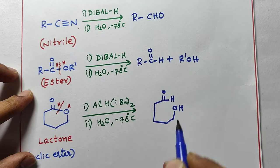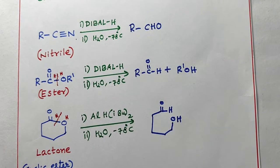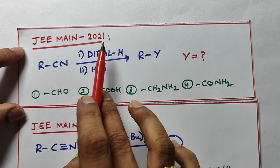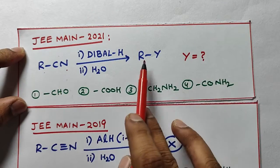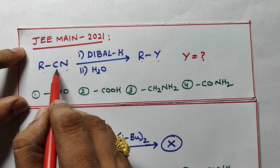Let us discuss JEE main questions. First, JEE main 2021. Here R-CN is converted into R-Y, then what is Y? Just before we discussed, right, here CN is converted into CHO. In presence of DIBAL-H, CN is converted into CHO.